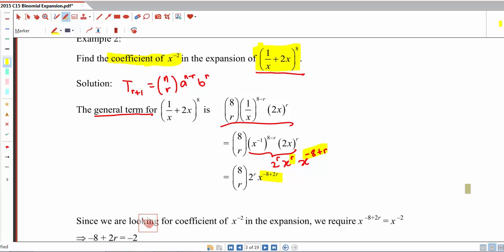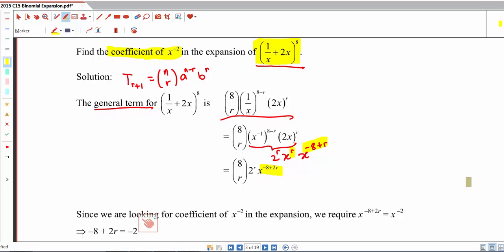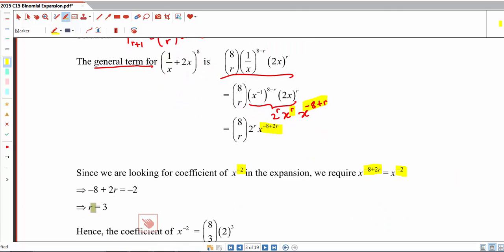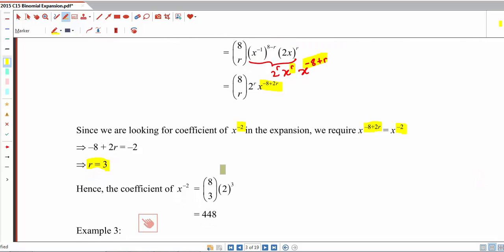So since we are looking for the coefficient of x to the power of negative 2 in the expansion, we want the power of x to be the same, which is that negative 8 plus 2r is the same as negative 2. And that is why we can equate them to solve for r to be equals to 3. But that's not the final answer, because we still need to evaluate what the coefficient is.